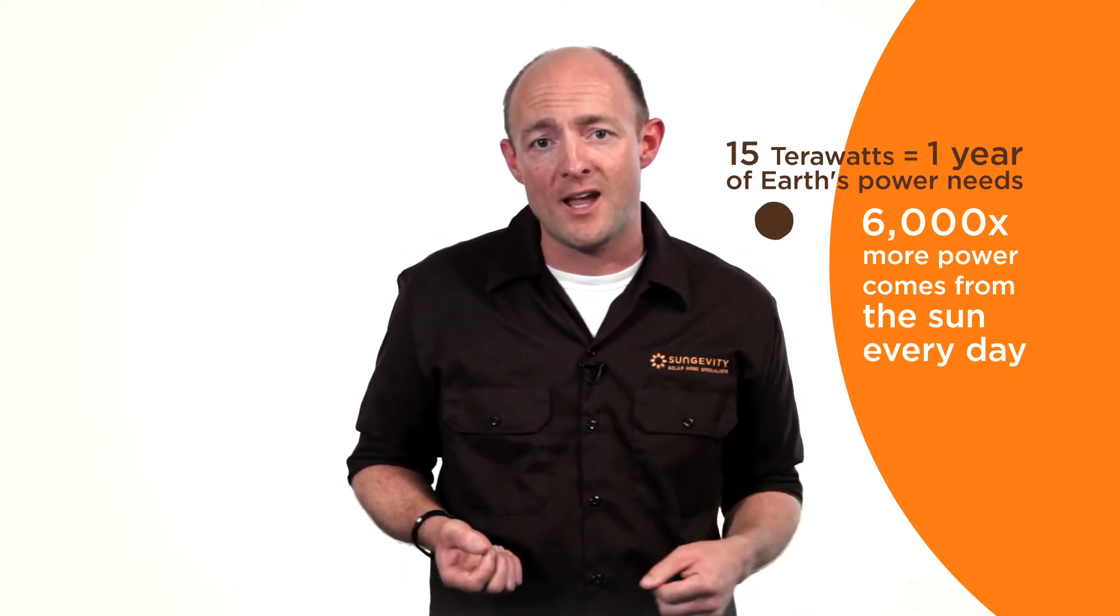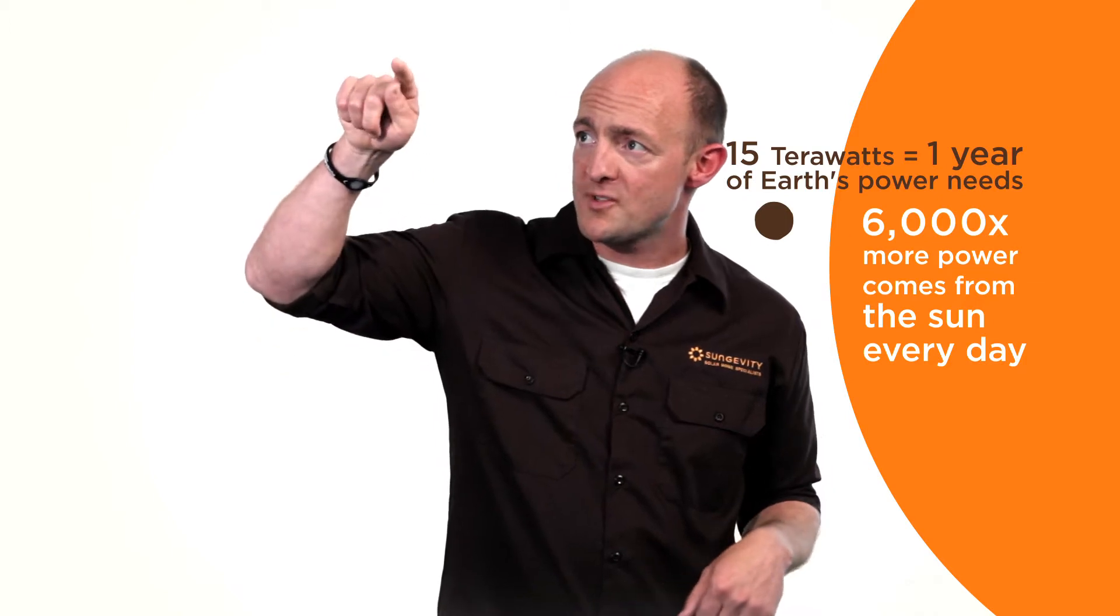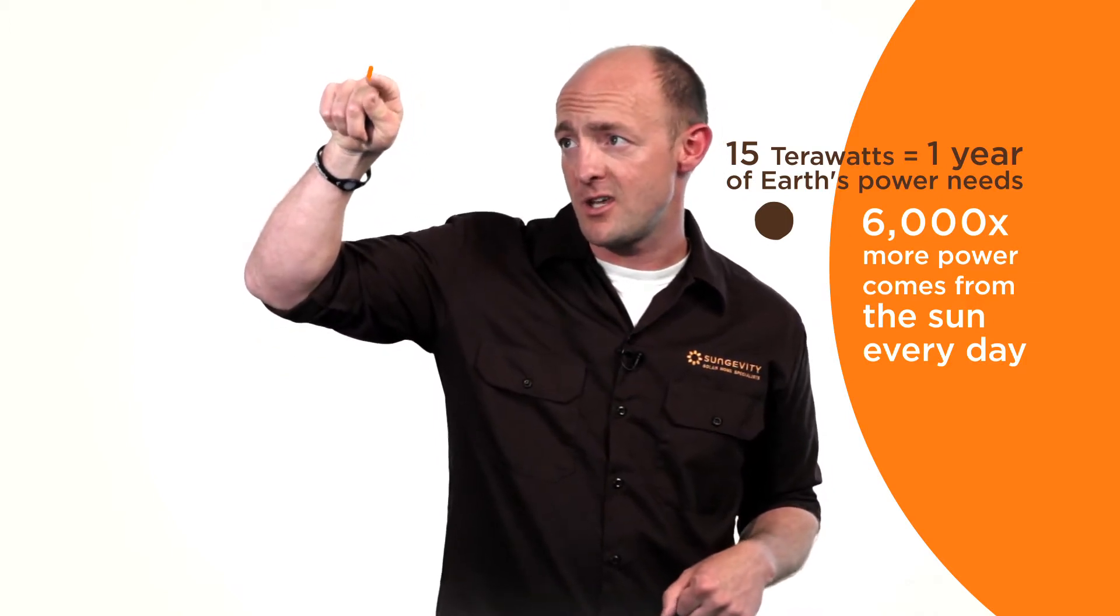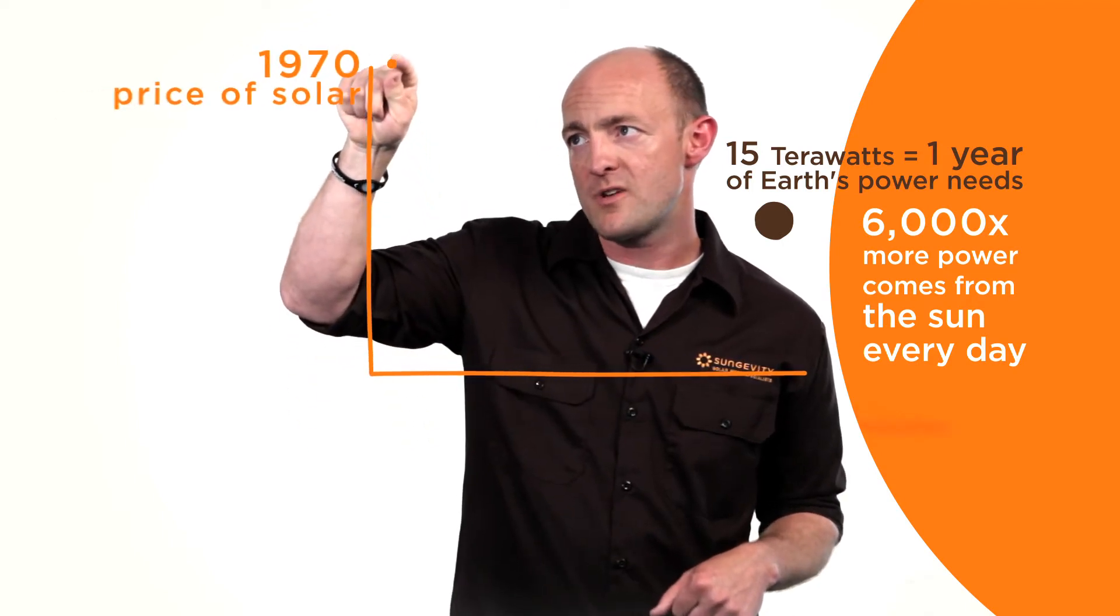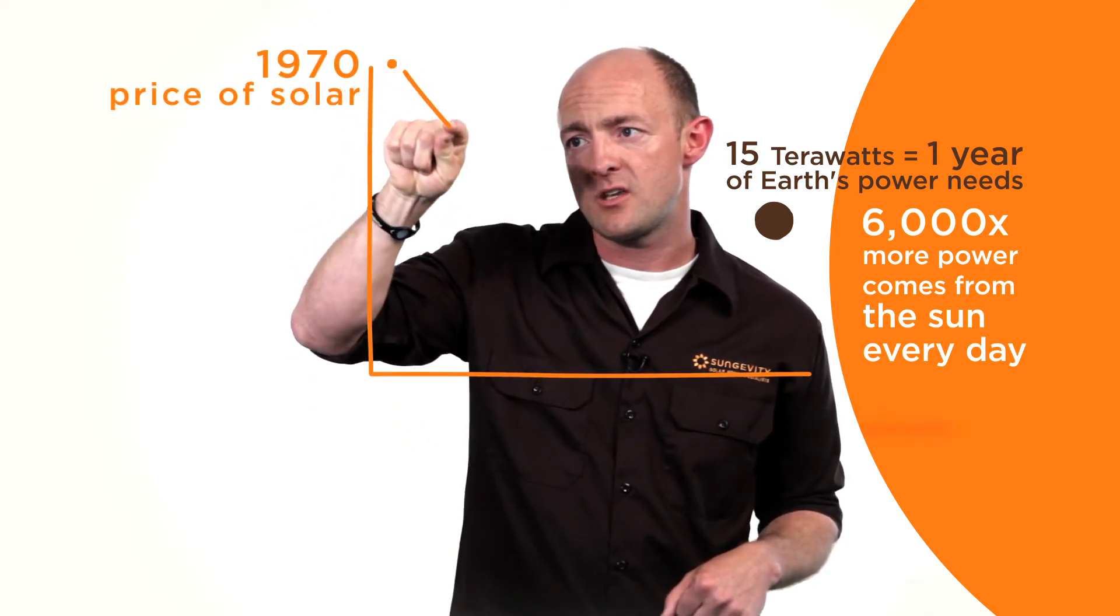What's happened thankfully over the last 30 years—this is the cost of solar energy. We start off in 1970, and over the last 30 years, the price of solar has fallen by 5% every year, consistently for 30 years.